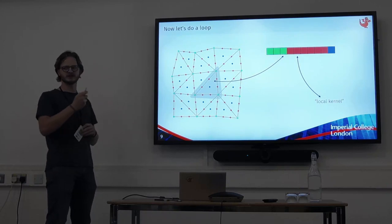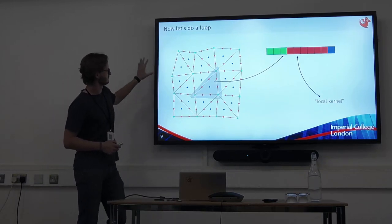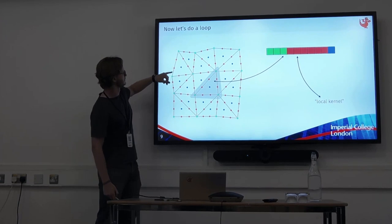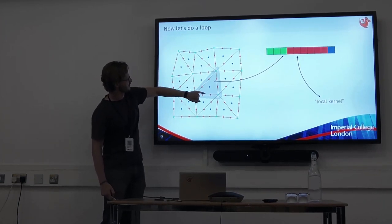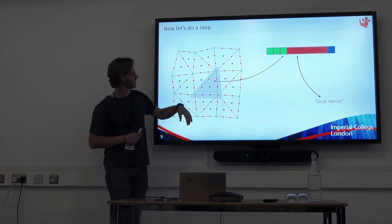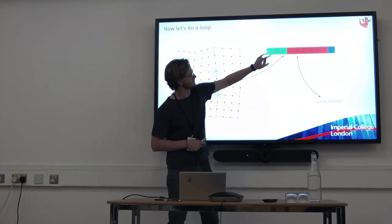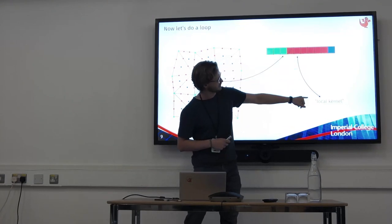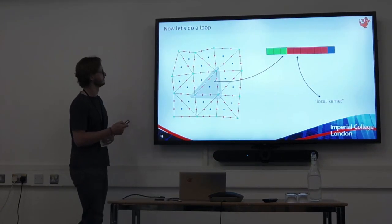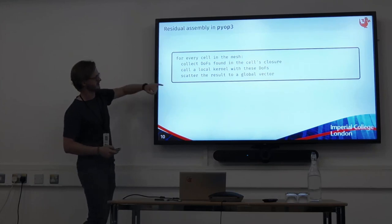We have our mesh data structure and we need to loop over it. I'm going to do a simple PyOP2-style loop. We have our mesh — this one's bigger than two cells, but it's still P3. We loop over every single cell one by one. For each cell we take all of the degrees of freedom contained within the closure — all the degrees of freedom that touch this cell. It's 10 entries; we pack it into a temporary with the vertex DOFs, the edge DOFs, and the cell one. We call a local kernel which does some computation on this, and then we scatter the result back out to some global data structure.